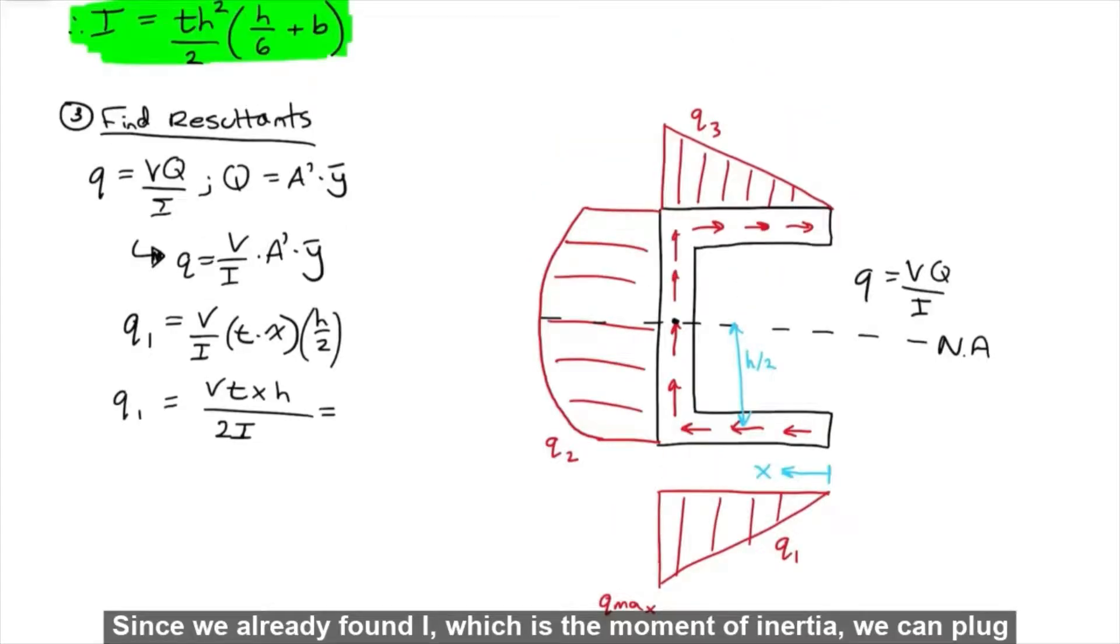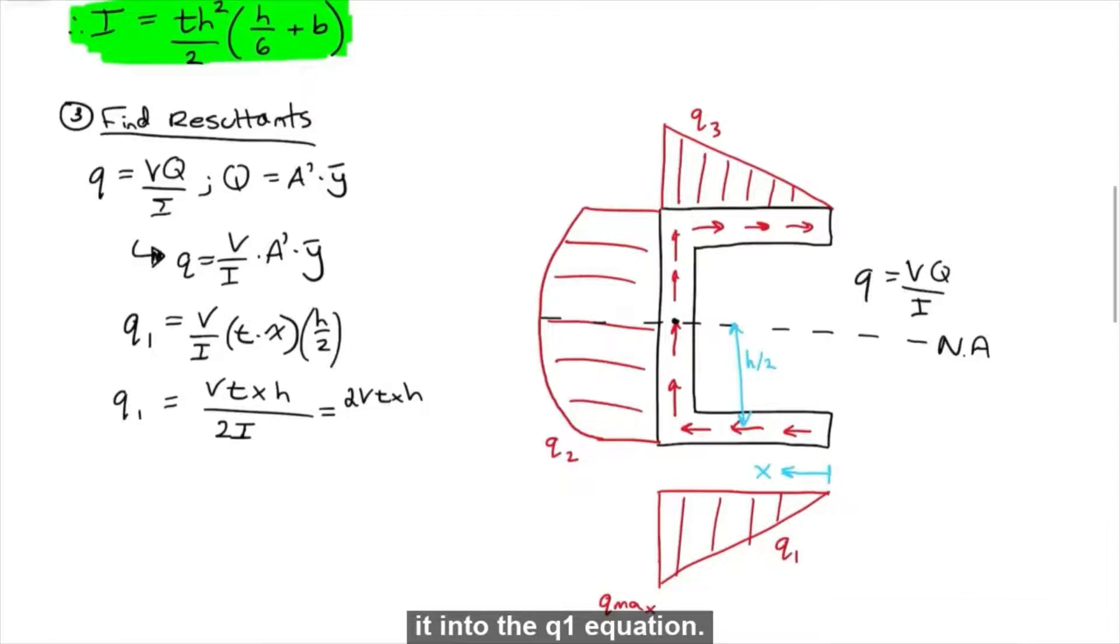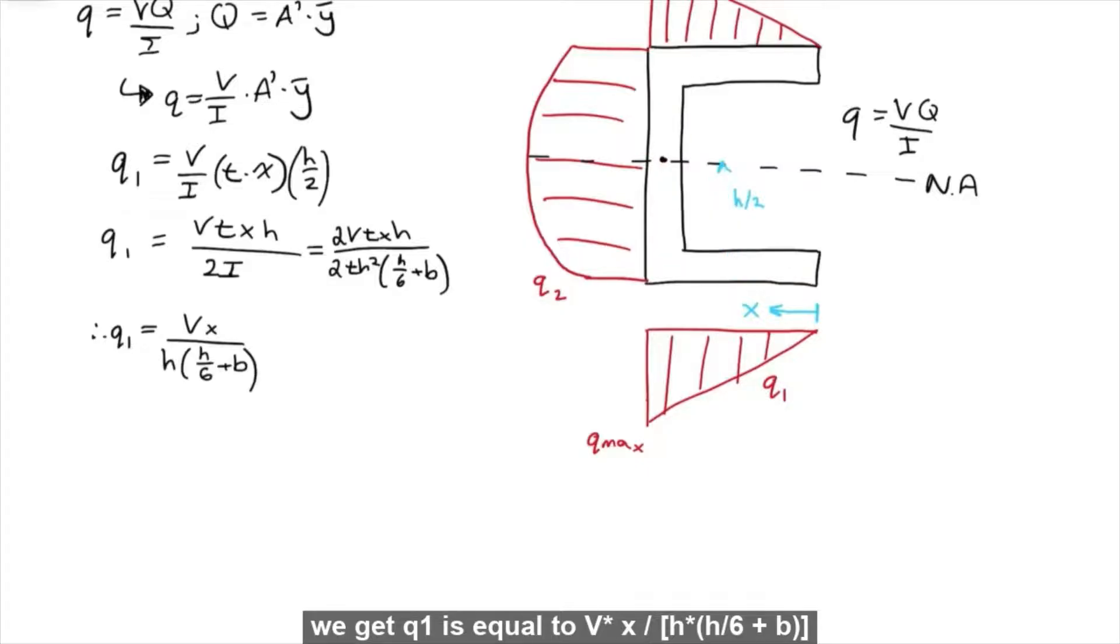Since we already found I, which is the moment of inertia, we can plug it into the Q1 equation. After simplifying the equation a bit, we get Q1 is equal to V times X over H times H over 6 plus B. Let's replace the shear flow on this diagram with its corresponding force resultants.